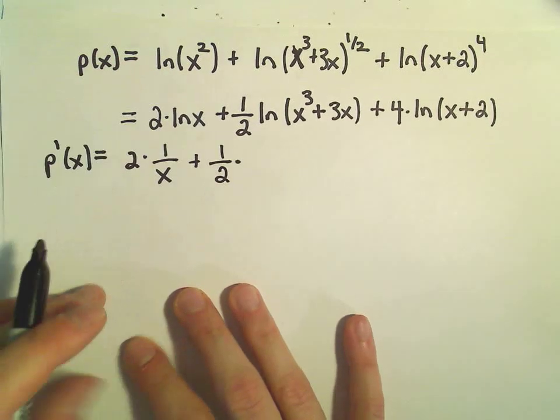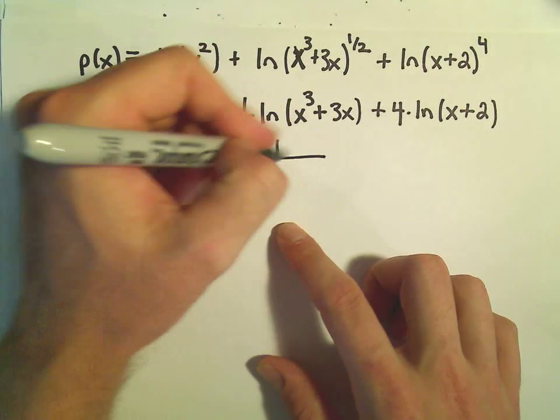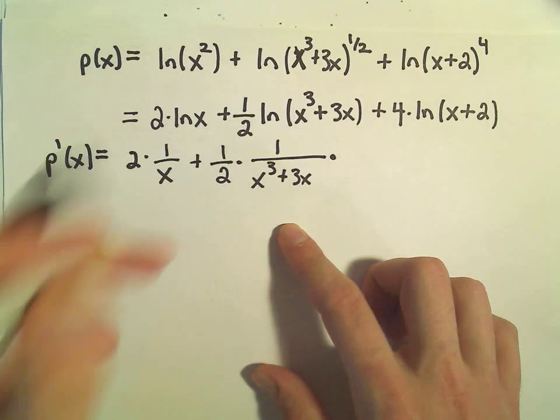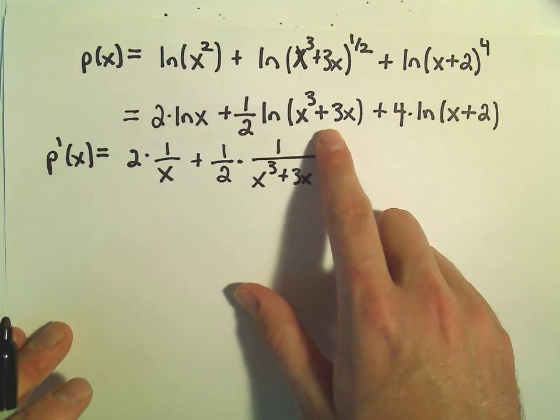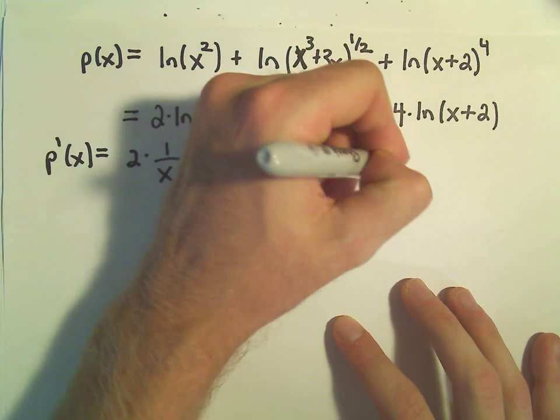So then we have our 1 half. The derivative of ln of x cubed plus 3x. Well, we'll get 1 over x cubed plus 3x. But then we have to take the derivative of the inside by the chain rule. So that will give us 3x squared plus 3.